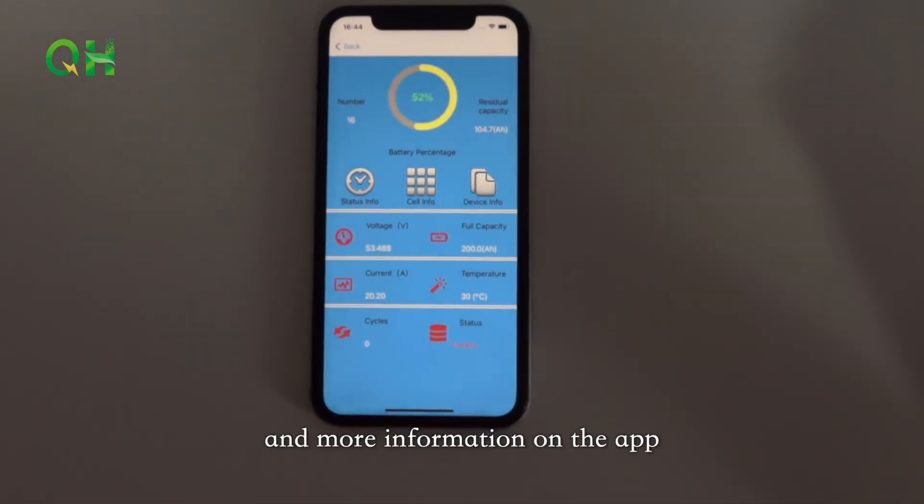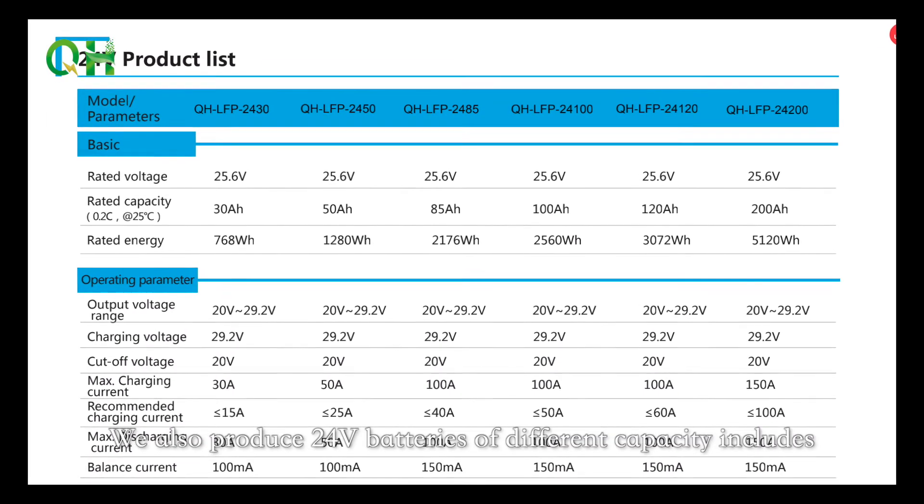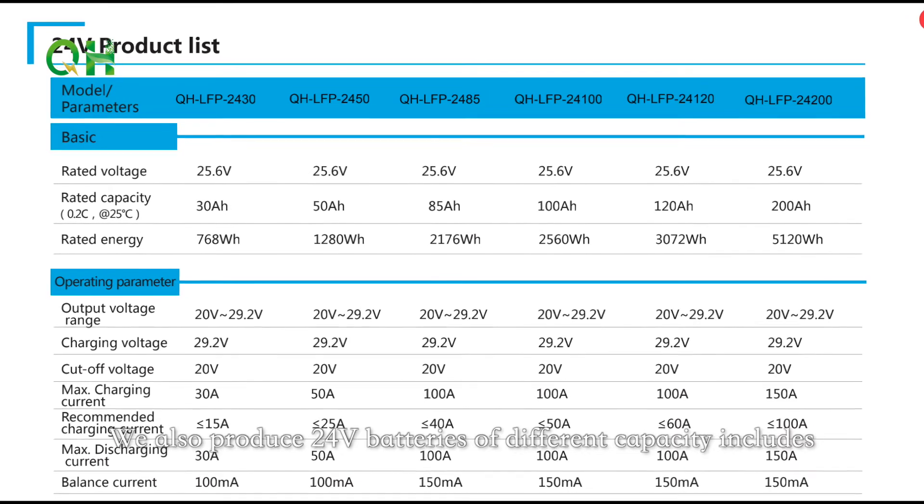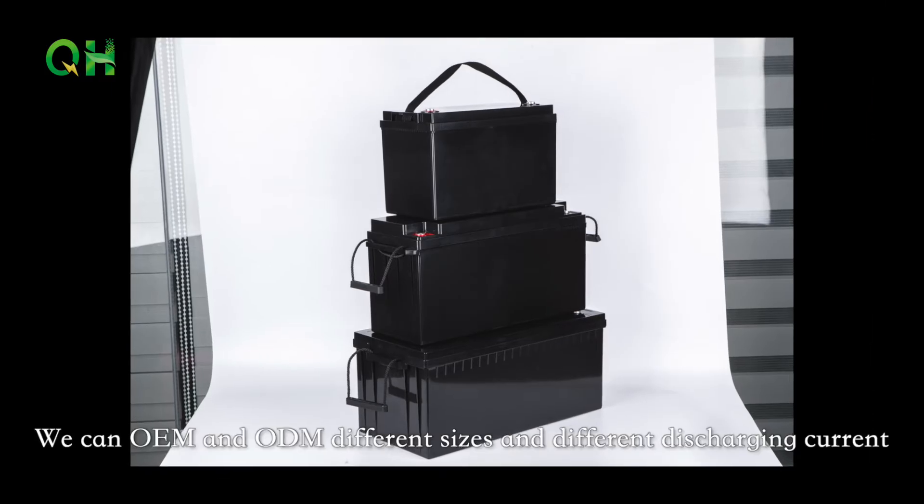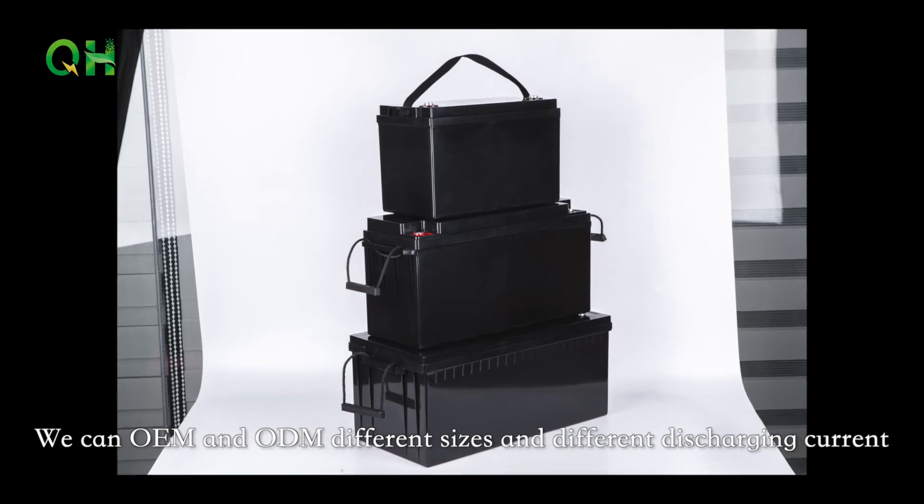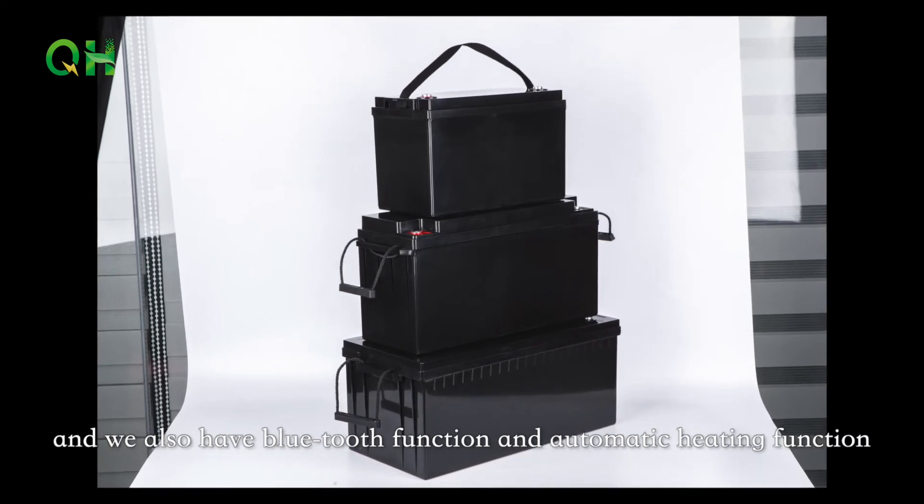We also produce 24V batteries of different capacities including 30Ah, 50Ah, 85Ah, 100Ah, 120Ah, 150Ah, and 200Ah. We offer OEM and ODM for different sizes and different discharge currents, and we also have Bluetooth function and automatic heating function.